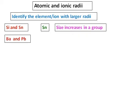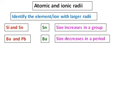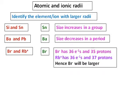Between barium and lead, the larger one is barium because they belong to the same period and size decreases in a period. For Br⁻ and Rb⁺, Br⁻ should be larger because anions are larger than cations. Br⁻ and Rb⁺ have the same number of electrons but different numbers of protons, and the fewer protons in Br⁻ makes it larger.